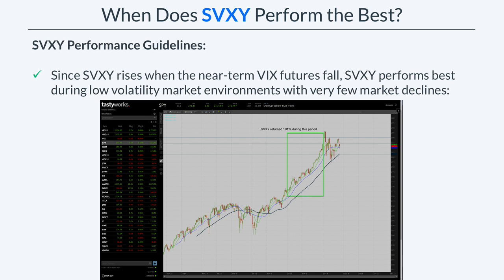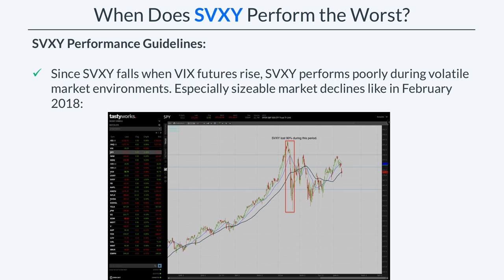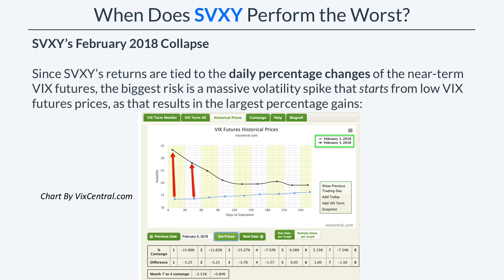On the other hand, since SVXY falls when the near-term VIX Futures rise, SVXY performs very poorly during volatile market environments — especially when there are very sharp and severe drawdowns that happen in a very short period of time. In February of 2018, we saw a very sizable market decline in only a couple of days, and that led to a 90% drawdown in SVXY. Since SVXY's returns are tied to the daily percentage changes of the near-term VIX Futures, the biggest risk is a massive volatility spike starting from low VIX Futures prices, because that will result in the largest percentage gains relative to the same increase from a higher price.